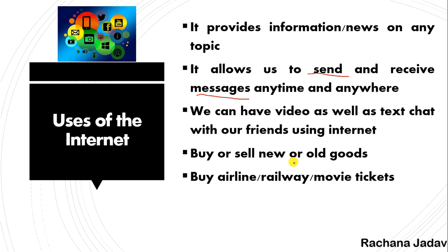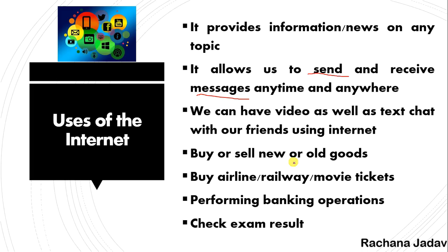You can buy airline or railway tickets — reservations can be done with the help of internet. Railway tickets, movie tickets, bus tickets, and hotel reservations can also be done. For banking operations, if you want to withdraw or deposit money, you don't have to stand in a long queue. You can do it with internet, and even transfer money from one person to another.